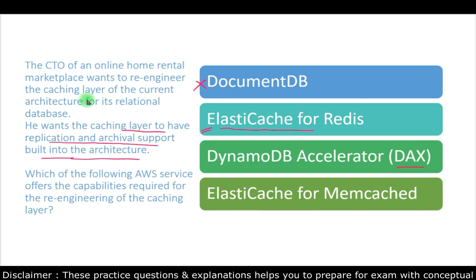DynamoDB Accelerator (DAX) is a key-value and document database that delivers single-digit millisecond performance at any scale. It is a fully managed, multi-region, multi-master durable database with built-in security. However, DAX cannot be used as a caching layer for a relational database, so this option is ruled out.